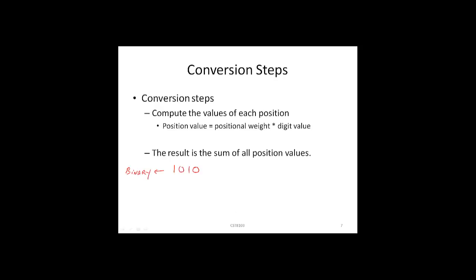What are the conversion steps? There are two steps. The first is we compute the values of each position — each position has a positional weight times the digit value for that position, and that gives us a position value. The result is the sum of all these position values.